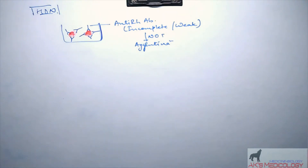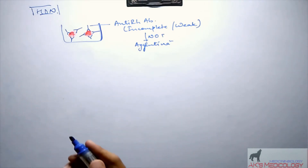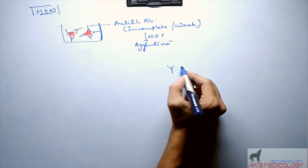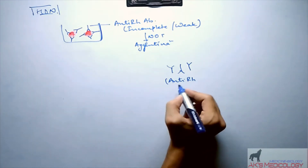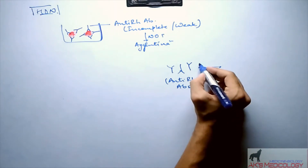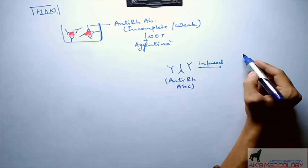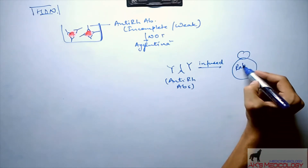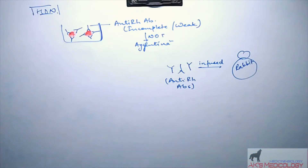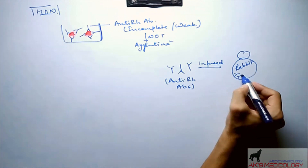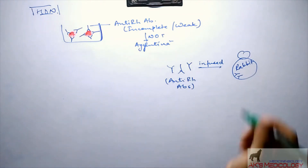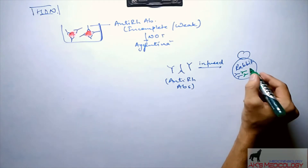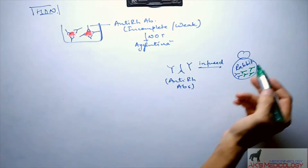Coombs reagent is prepared by infusing these anti-Rh antibodies into the body of a rabbit. When these foreign anti-Rh antibodies are infused, the immune system of the rabbit forms antibodies against these anti-Rh antibodies which are foreign to the body of the rabbit.